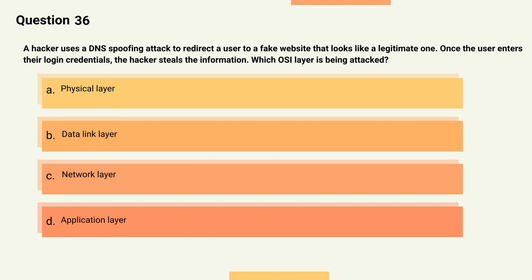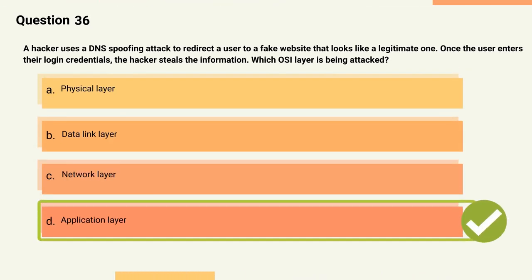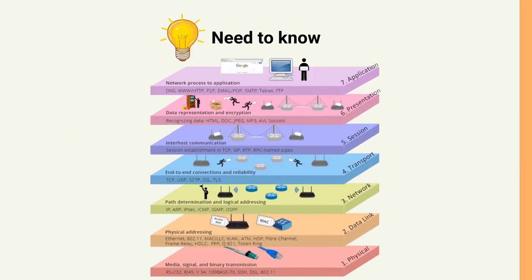Question 36: A hacker uses a DNS spoofing attack to redirect a user to a fake website that looks like a legitimate one. Once the user enters their login credentials, the hacker steals the information. Which OSI layer is being attacked? Options: A) Physical layer, B) Data link layer, C) Network layer, D) Application layer. The correct answer is Option D, Application layer. Explanation: The application layer is responsible for providing end-user services such as web browsing. The DNS spoofing attack to redirect the user to a fake website is an attack on the application layer.